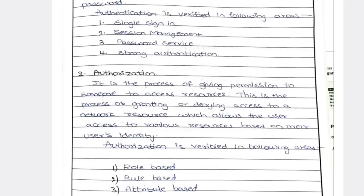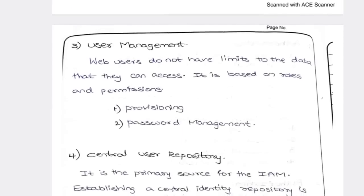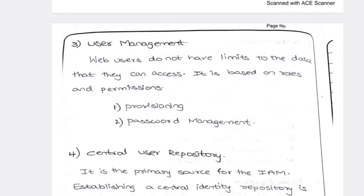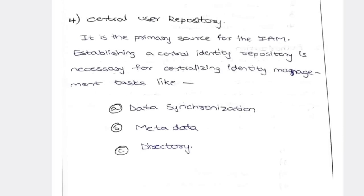Authorization works like this: if you log in to your email from another phone, you first need to grant access from your main mobile device — then only that other device gets access. If you enter the correct password, your original mobile generates authorization. User management is password management — it provides and suggests passwords and manages them in your mobile. Central user repository performs all the tasks in your mobile system.